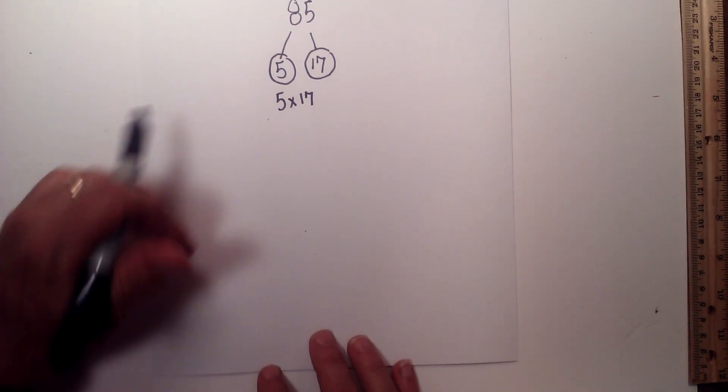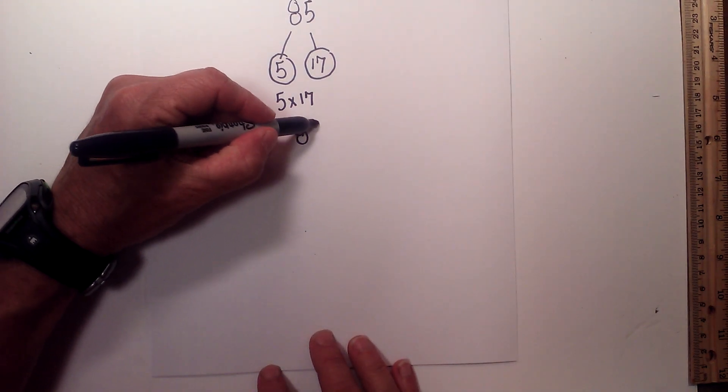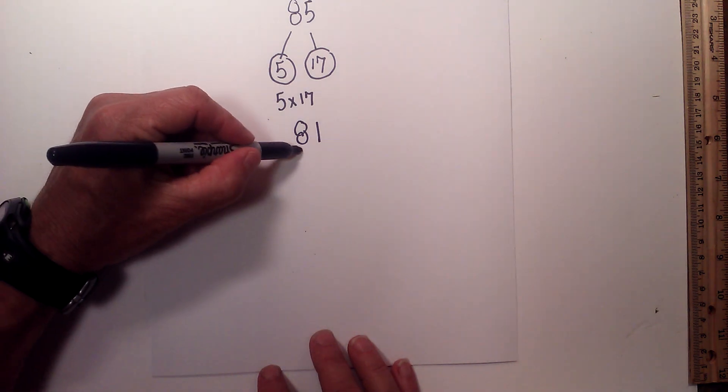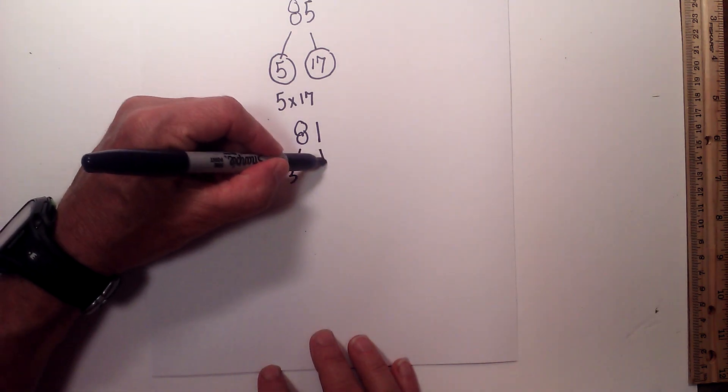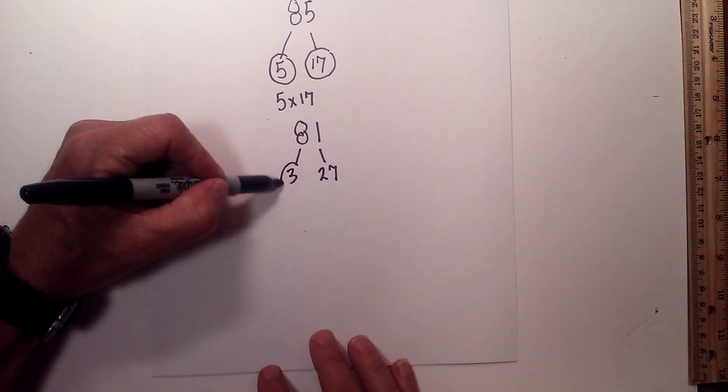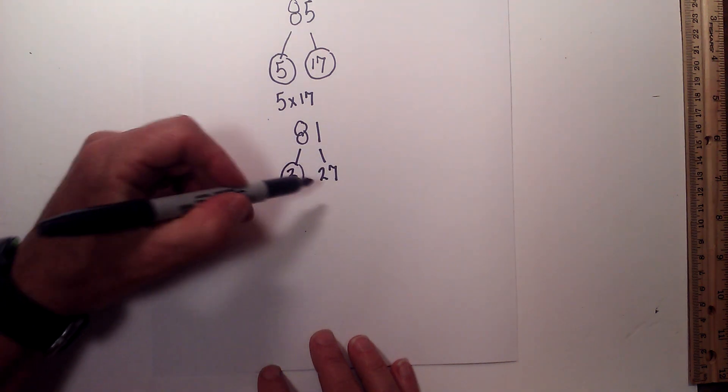Now let's look at 81. Prime factorization of 81 is you start with 3 times 27. I will circle the 3 because it is prime.